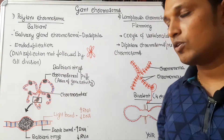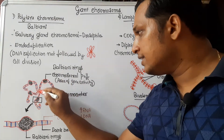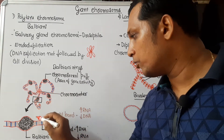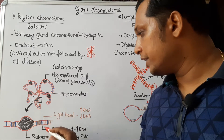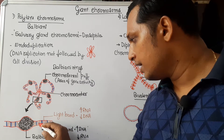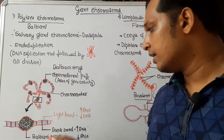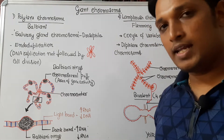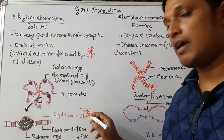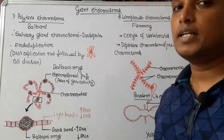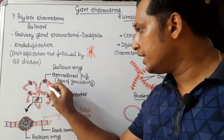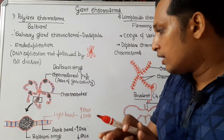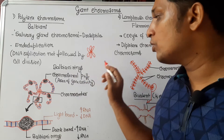That is the structure of polytene chromosome. If you analyze these arms, there are dark bands and light bands. The blue colored ones are dark bands and the remaining are light bands. Dark bands are the region having a high amount of DNA and less amount of RNA, whereas light bands are the region having a high amount of RNA and less amount of DNA. In the polytene chromosome, you will find a region of swelling or puffy appearance known as chromosomal puff.